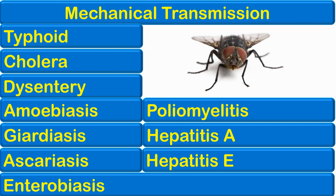In addition to biological transmission — where the infectious organism enters and undergoes development or propagation inside the vector — the infectious organism can also be transmitted by vectors by mechanical means. In mechanical transmission, the organism resides on the outer body parts of the vector. An example includes house flies, which can mechanically transmit several infections.